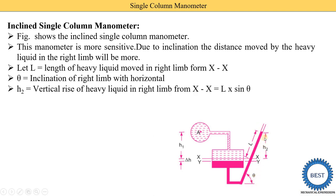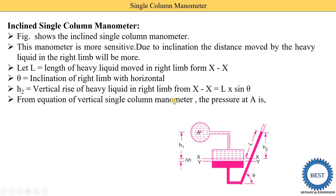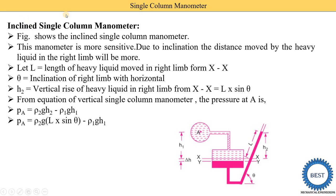H2 is the vertical rise of heavy liquid in the right limb from X-X, and equals L × sin(theta). This comes from the right triangle formed: sin(theta) = opposite/hypotenuse = H2/L, so H2 = L × sin(theta). Using the same pressure equation as the vertical case, PA = rho2 × g × H2 − rho1 × g × H1, we substitute H2 = L × sin(theta). The final equation for the inclined single column manometer is: PA = rho2 × g × L × sin(theta) − rho1 × g × H1.